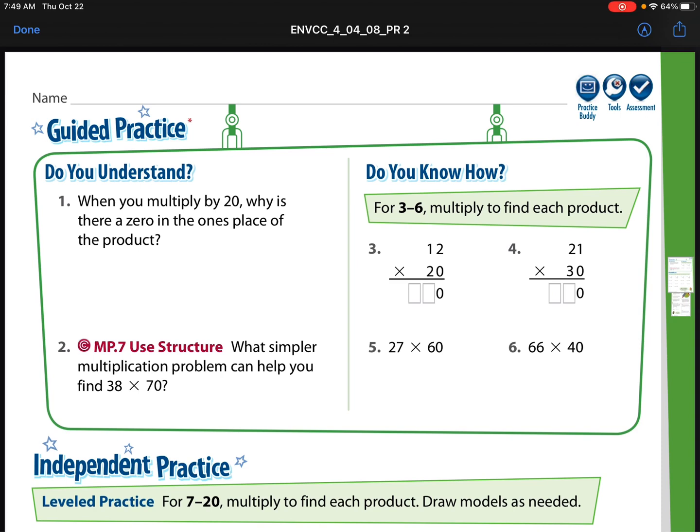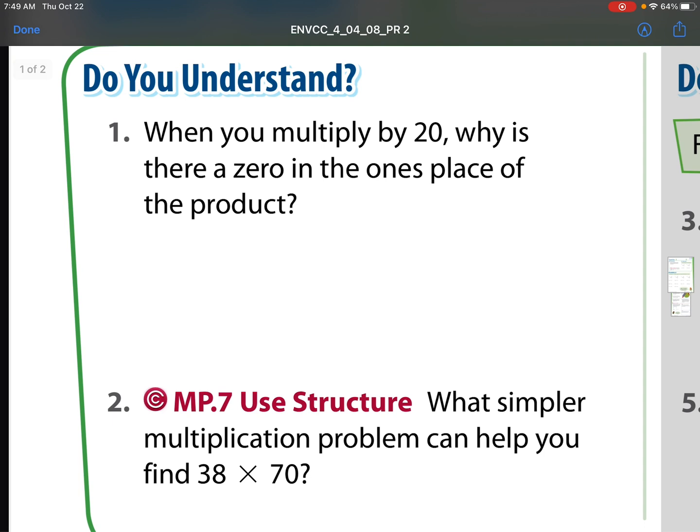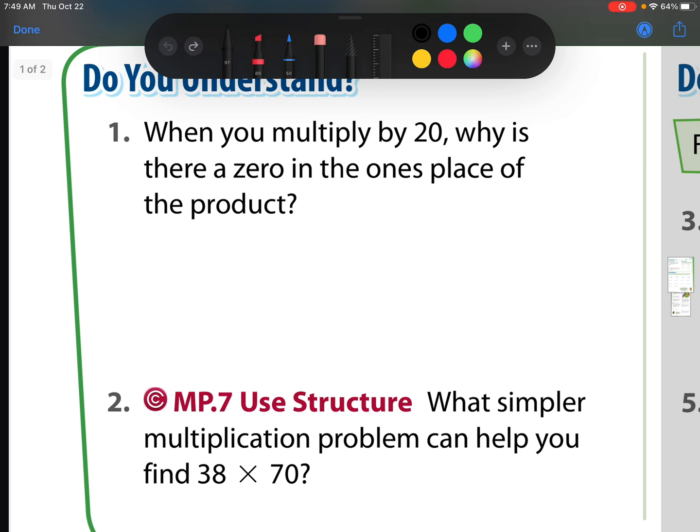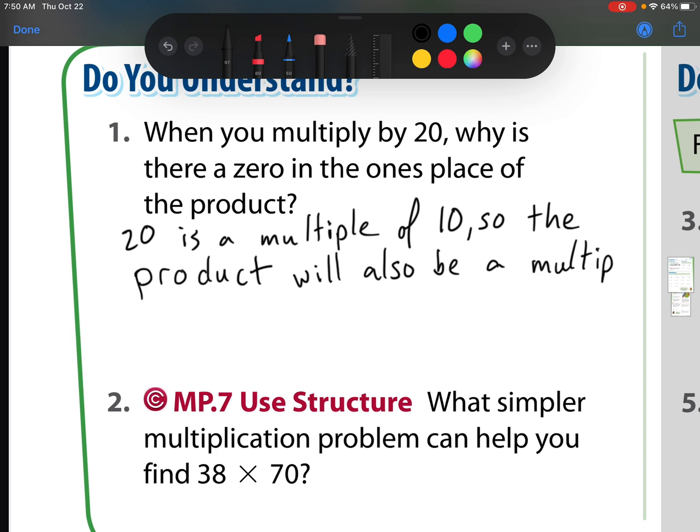So let's get started with question number one. Our first question says, when you multiply by 20, why is there zero in the ones place of the product? And our answer is because 20 is a multiple of 10. So the product, remember what does product mean? Product means it's the answer to a multiplication problem. So the product will also be a multiple of 10 and have a zero in the ones place.